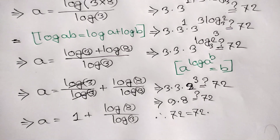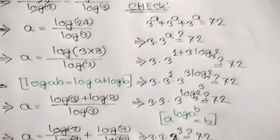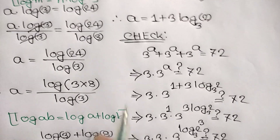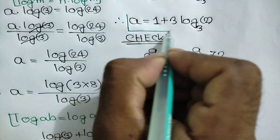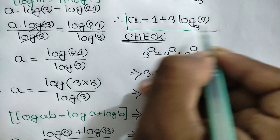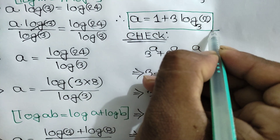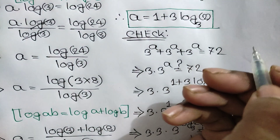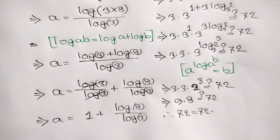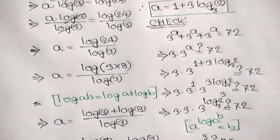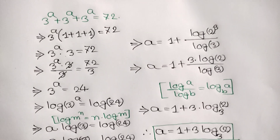So our final answer is a is equal to 1 plus 3 times log base 3 of 2. Thanks for watching. If you like this video, please subscribe to my channel, and see you in the next video. Bye bye.